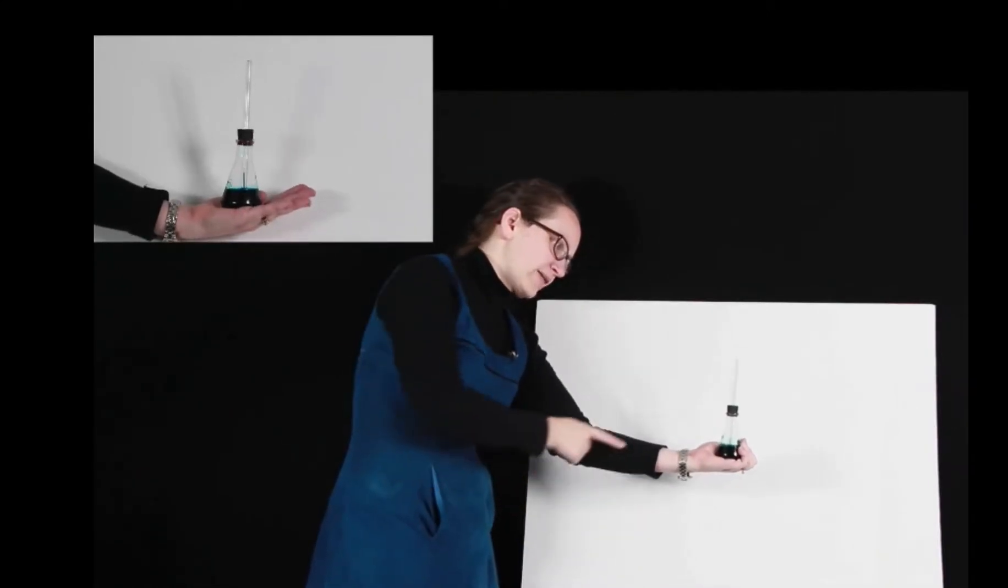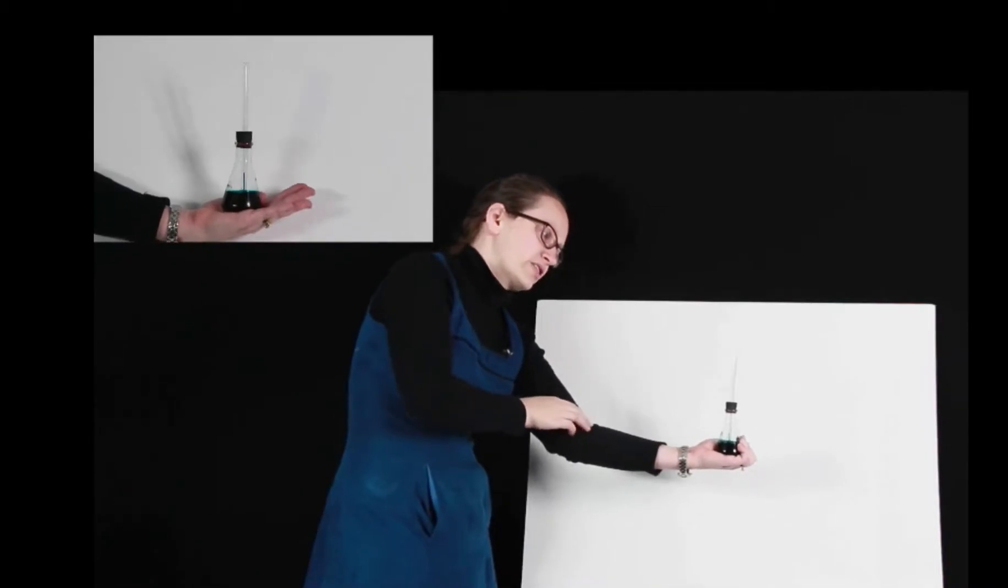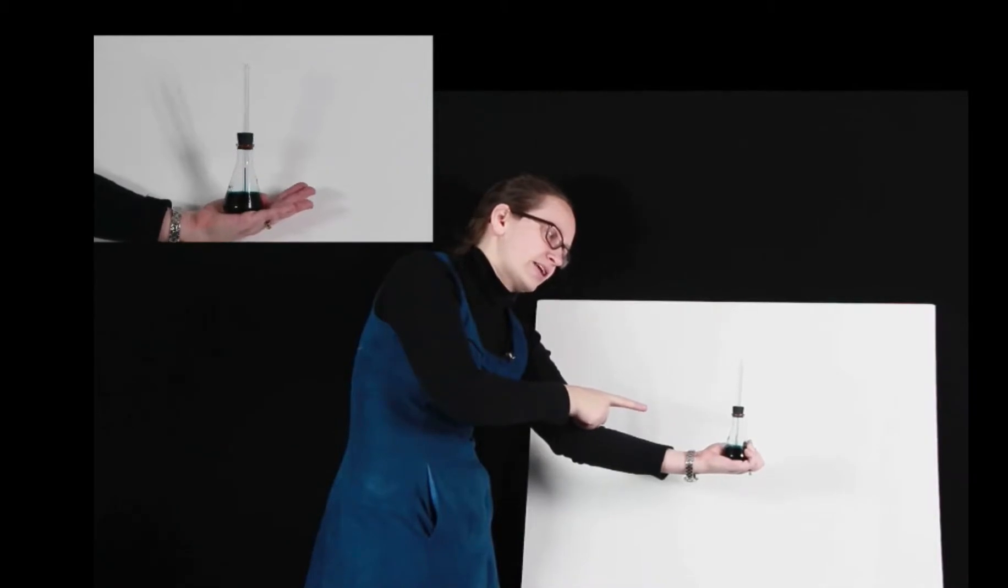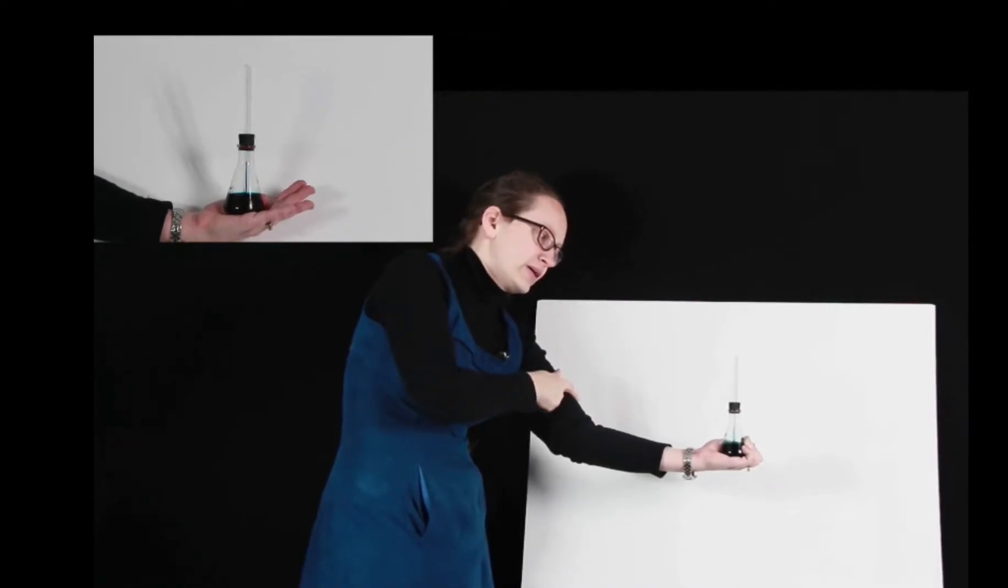As I'm holding it, I'm transferring heat from my hand to the liquid, causing the temperature of the liquid to rise, and this is causing the volume of the liquid to rise. You can see that the liquid is rising up through the capillary tube as its volume increases.